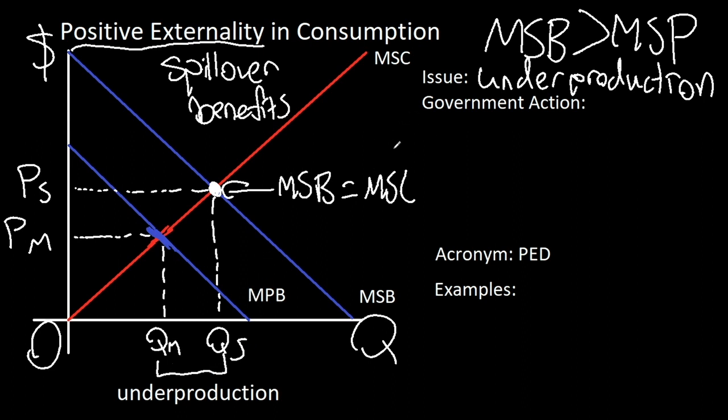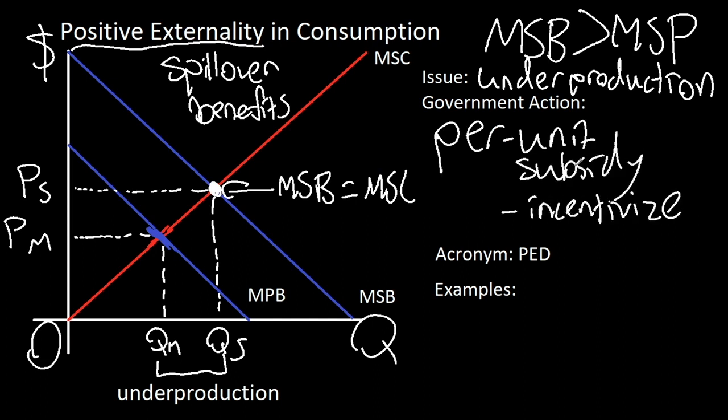As we've learned in previous units, we can do this by giving the firm a per unit subsidy. This is how to incentivize the firms to essentially keep doing what they're doing and produce more of this good that's benefiting society a lot. So short acronym you can use for positive externalities in consumption is this called PED, which I took from a Barron's AP microeconomics book you should definitely get. This essentially means positive externality demand. Positive externalities have two demand curves, as we can see here.